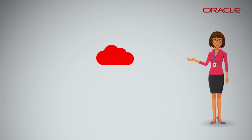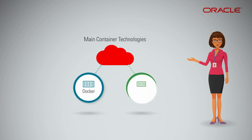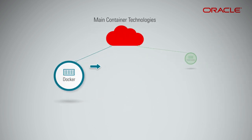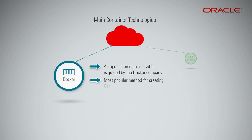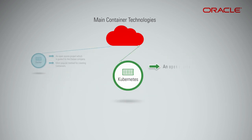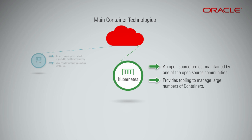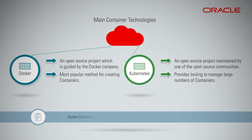When deploying containers on Oracle Cloud Infrastructure, there are two main container technologies to keep in mind: Docker and Kubernetes. Docker is an open-source project guided by the Docker company, and Docker's flavor of containers is the most popular method for creating containers. Kubernetes is an open-source project maintained by one of the top five fastest-growing open-source communities, and it provides tooling to manage large numbers of containers. Docker containers are the most popular type of containers used with Kubernetes.